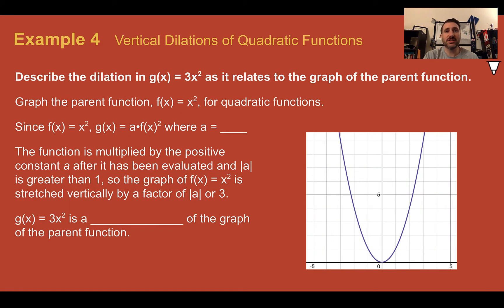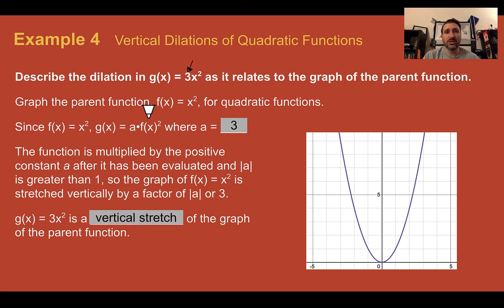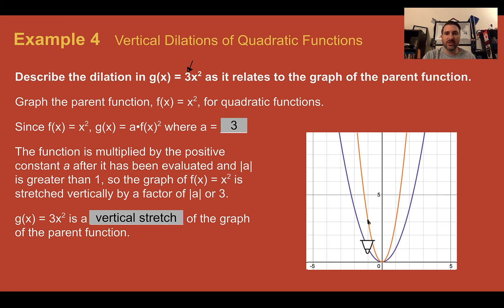Example four: vertical dilations of quadratic functions. Describe the dilation in g of x equals 3x squared as it relates to the parent function. We can see a number out front — a is equal to 3. So we're going to multiply by 3 after we plug in and do the exponent for x squared. This is a vertical stretch. Everything would be pulled upward and is three times what it was before. Originally a point might be one up; now it's three up. A point that was four up would now be at twelve. Everything got pulled three times farther than what it was before.